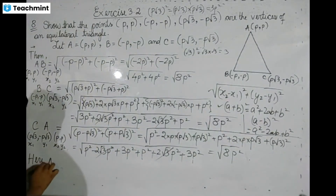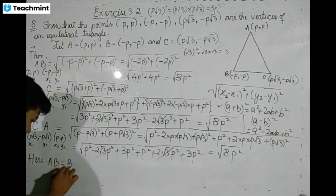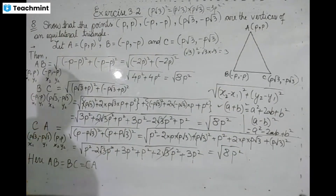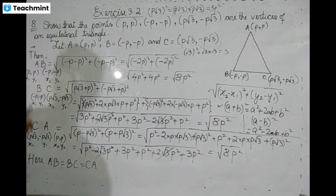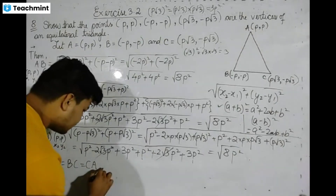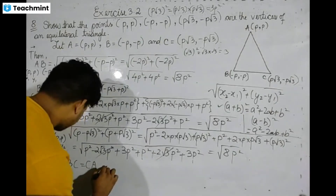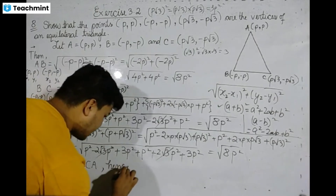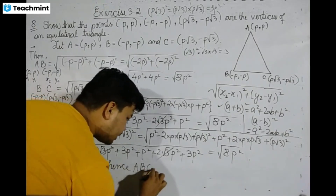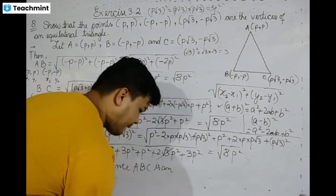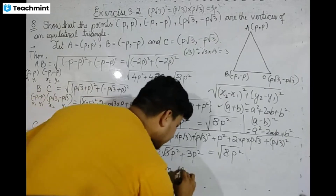Here AB equals BC equals CA. AB, BC, and CA are all equal. Hence, ABC is an equilateral triangle.